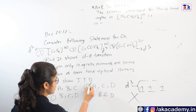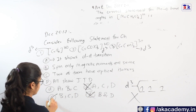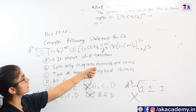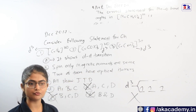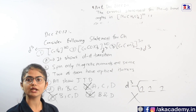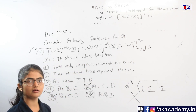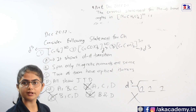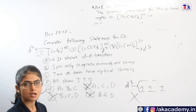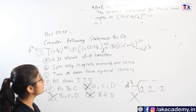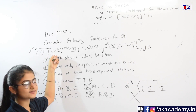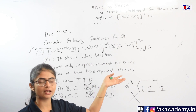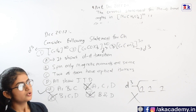Since statement D is wrong, any option containing D must be eliminated. That removes options B, C, and any other option with D, leaving only option A. Checking the remaining statements: d3 complexes can show d-d transitions (unlike d5 which shows spin-forbidden transitions); all three have three unpaired electrons so the spin-only magnetic moments are the same; and two of the complexes (those with bidentate ligands) can exhibit optical isomers, while the one with all identical ligands cannot. So all three remaining statements are correct and option A is the correct answer.